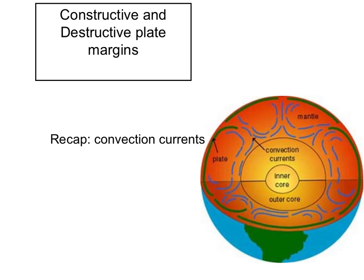First of all, if you think back to your last week's homework based around convection currents and key words, you can see the diagram here showing the inner core, outer core, and the mantle, with the plate around the outside. The diagram also shows convection currents — these are the way that heat is transferred from the inner core through the outer core and out into the mantle. As a result, the plates on the outside of the Earth rest and almost float on top of the mantle, which is moving around, and it is this movement below which moves the plates.